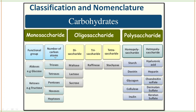Based on number of carbons, monosaccharides are divided into: triosis (3-carbon), tetrosis (4-carbon), pentosis (5-carbon), hexosis (6-carbon), and heptosis (7-carbon). This is the classification and nomenclature of monosaccharides.